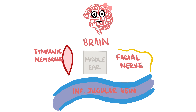There are many important structures surrounding the middle ear. Superiorly, the brain can be found separated by the petrous part of the temporal bone. Therefore, fractures of the cranial floor can allow the middle ear to communicate with the brain and lead to severe infection like meningitis or brain abscesses. Inferiorly, the internal jugular vein is found.